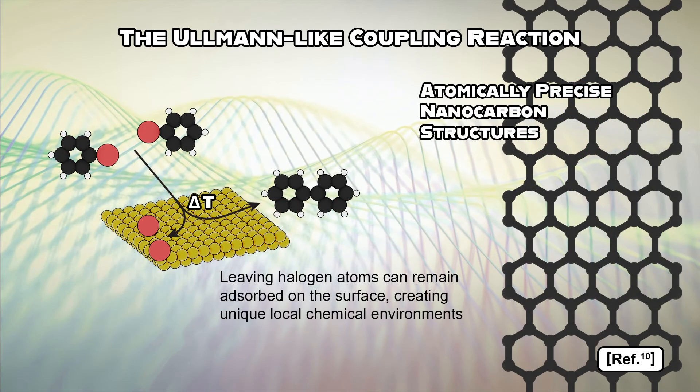Aromatic precursor molecules containing aryl halides can undergo dehalogenative coupling reactions via thermal activation on a metal substrate, yielding atomically precise nanocarbon structures. Although a leaving group, the halogen atoms can remain adsorbed on the surface in some cases. This can result in highly localized chemical environments where the halogen atoms can stabilize reaction intermediates and therefore enable the on-surface synthesis of unique nanostructures.